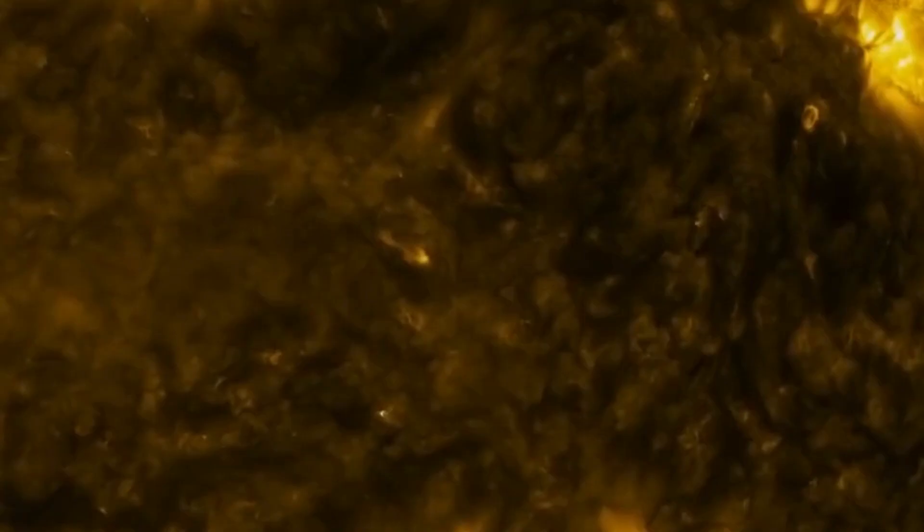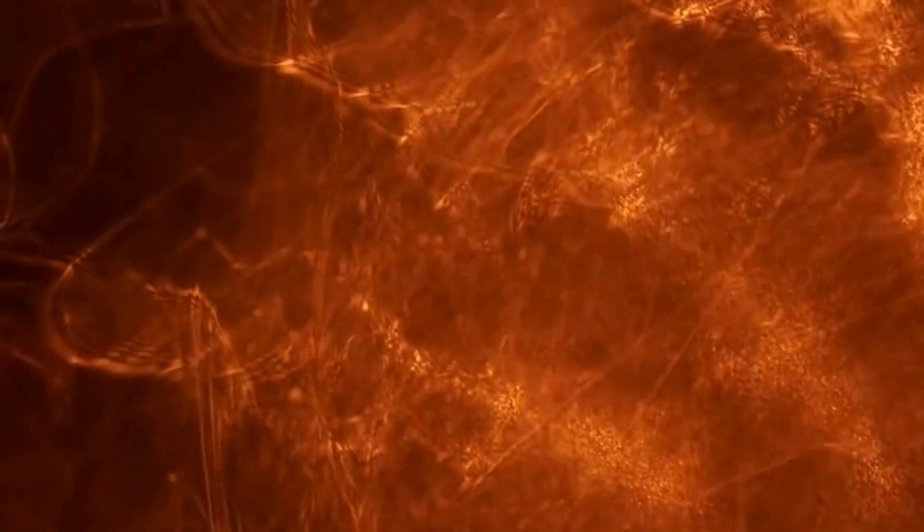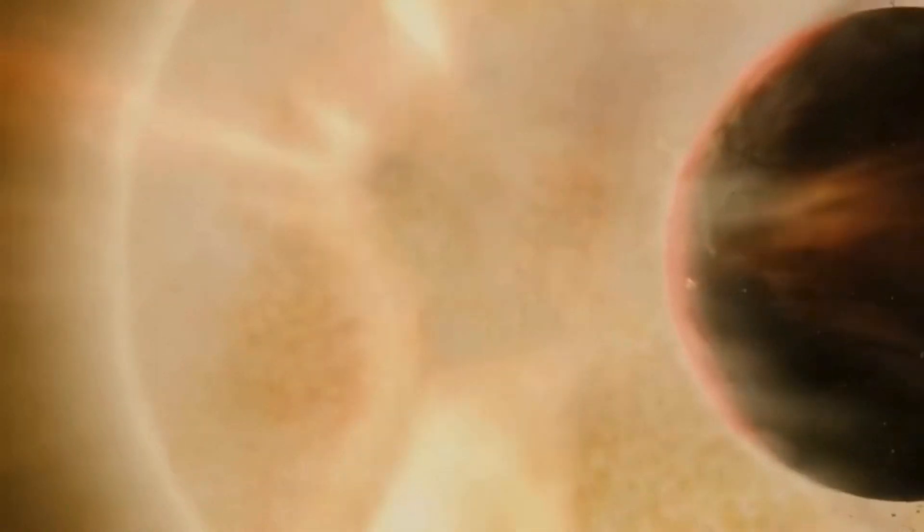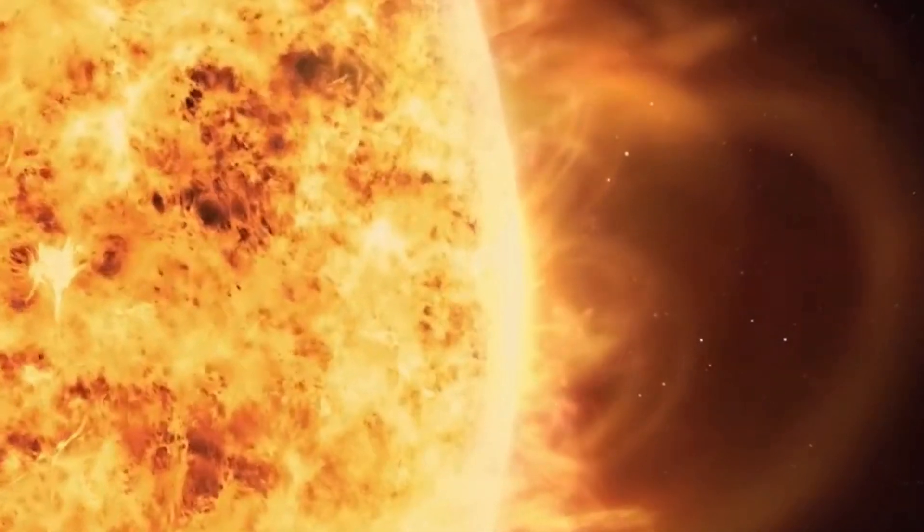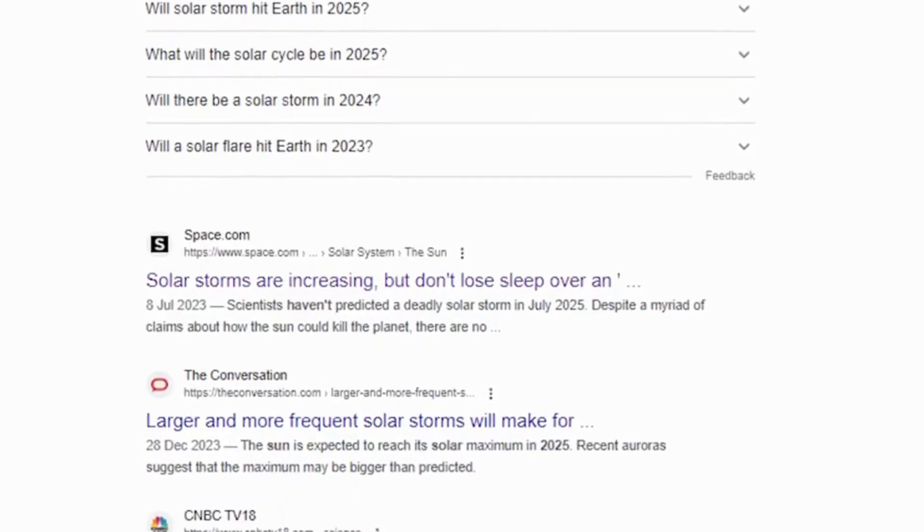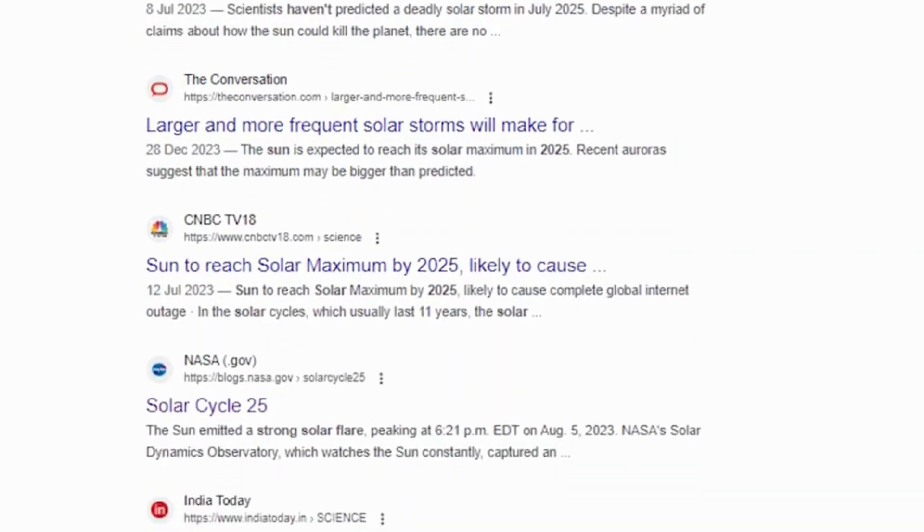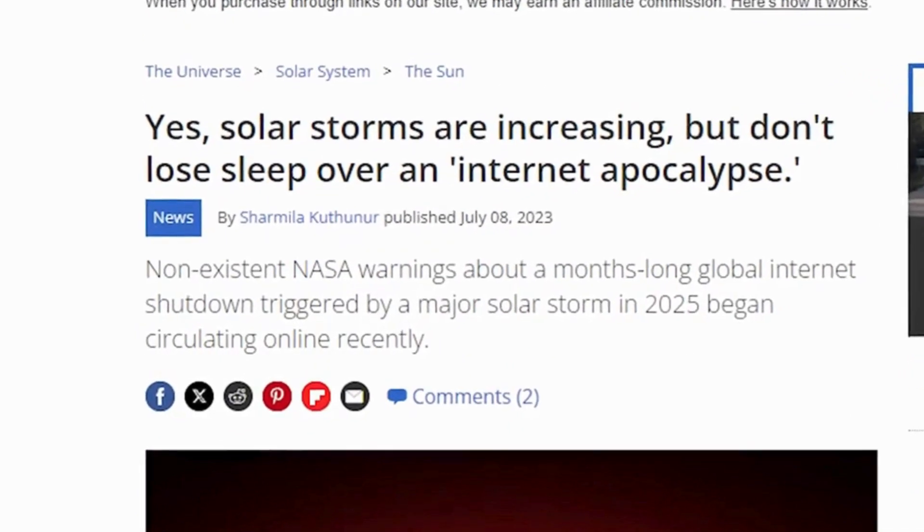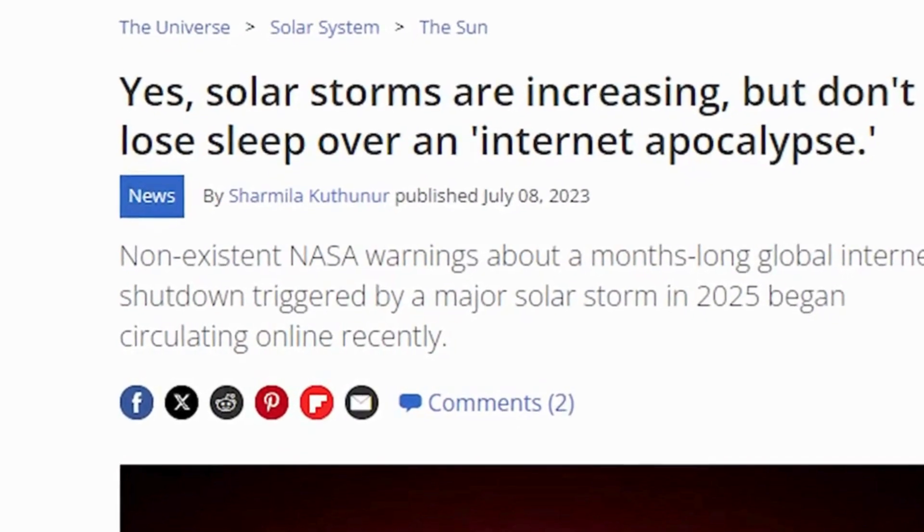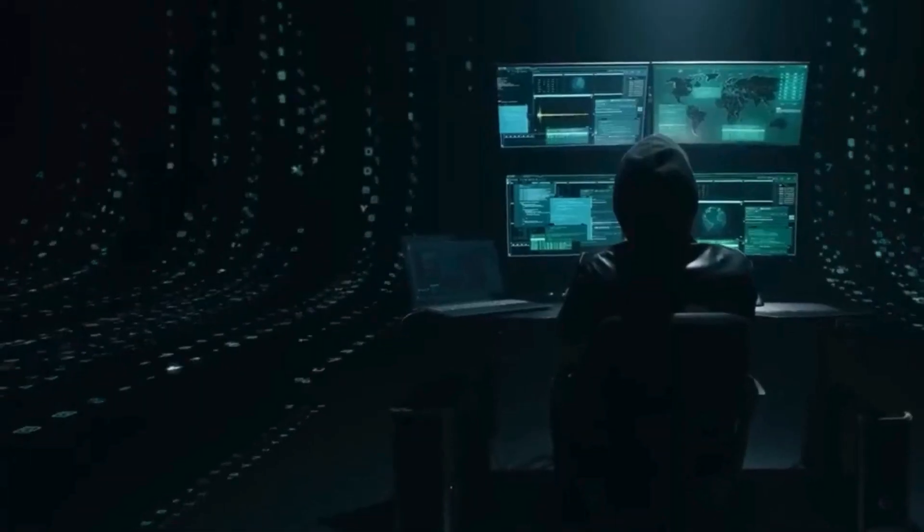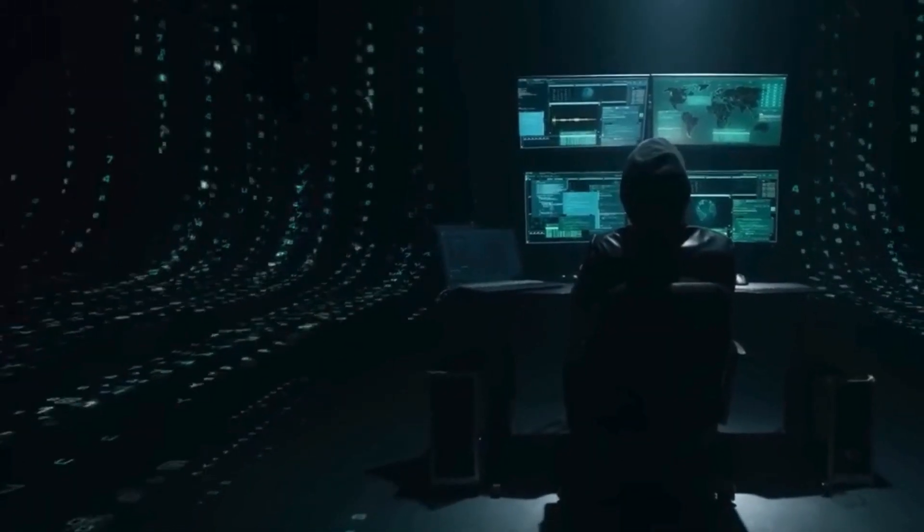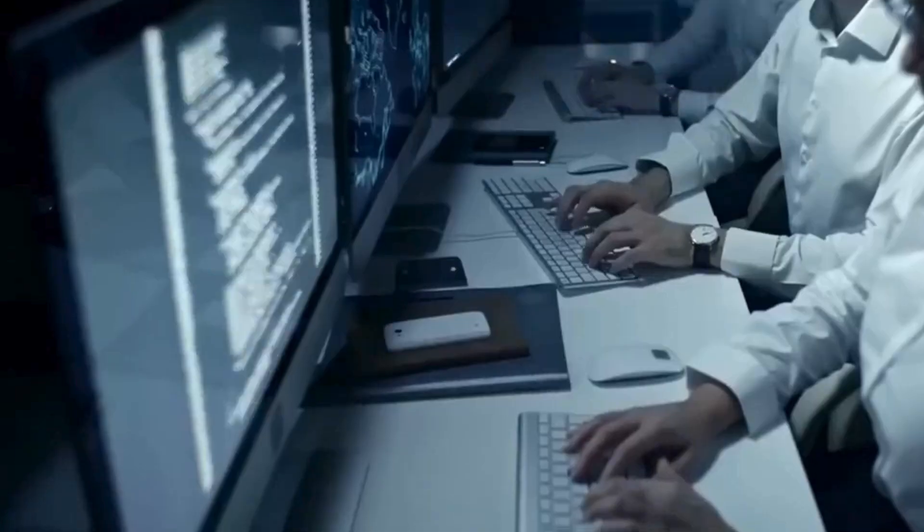They claim that a solar storm is expected to hit earth in July 2025, cutting off electricity and internet worldwide for months. But based on the latest research I have conducted, no credible source has mentioned anything about this event occurring. It appears to be just a rumor aimed at scaring people, and so far, nobody knows the motive behind spreading such information or why it has leaked out.